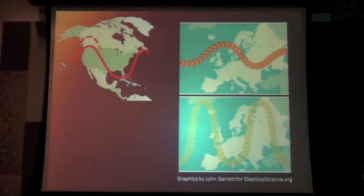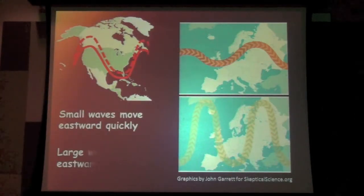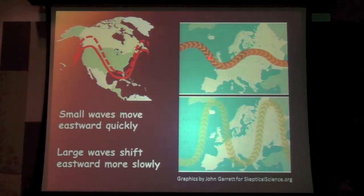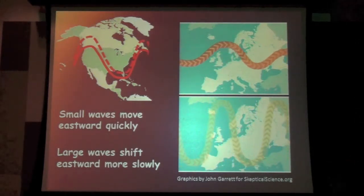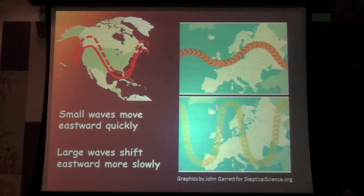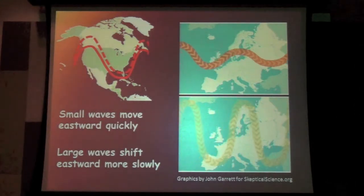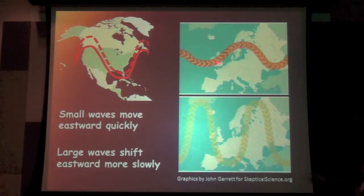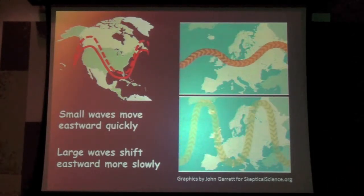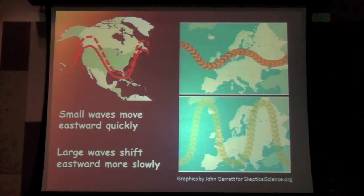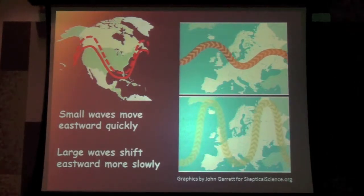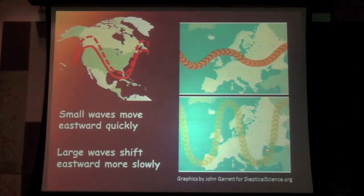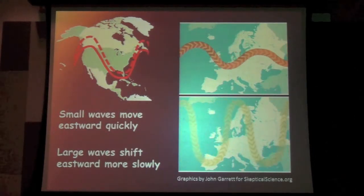So why do we care about these waves? What we know is that when these waves in the jet stream, which are shown by these two schematics here, when the waves are small they tend to move quickly from west to east. You can see that's happening in this schematic up here. But when the waves get bigger, which is what we expect to see as the jet stream gets weaker, those waves move much more slowly from west to east across the land.